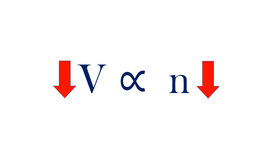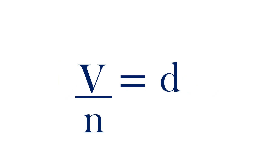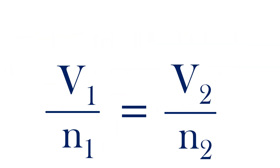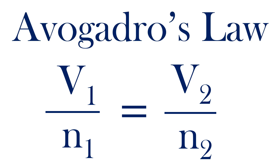Furthermore, we can divide both sides by moles and get the ratio of volume over moles. This ratio always equals some constant — we'll call that constant D. Recall that gases depend on pressure, temperature, volume, and moles. Assuming pressure and temperature are constant, this ratio must always equal a constant. Thus, if there's a change in the volume or moles, the product must remain constant. This is called Avogadro's Law.